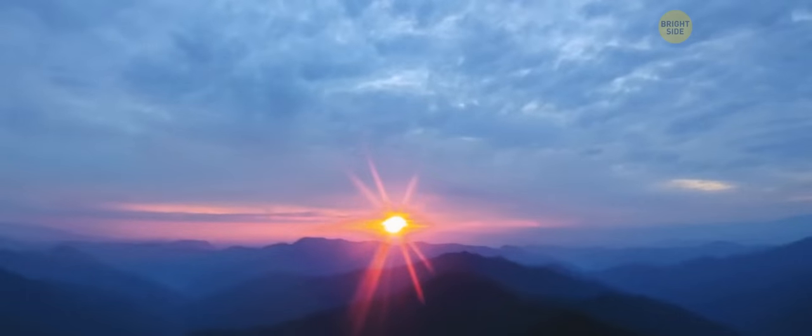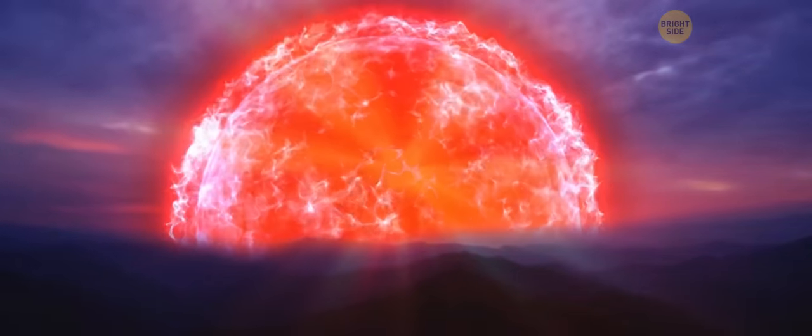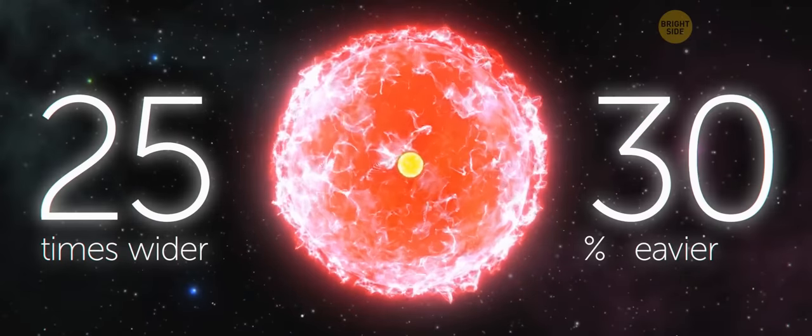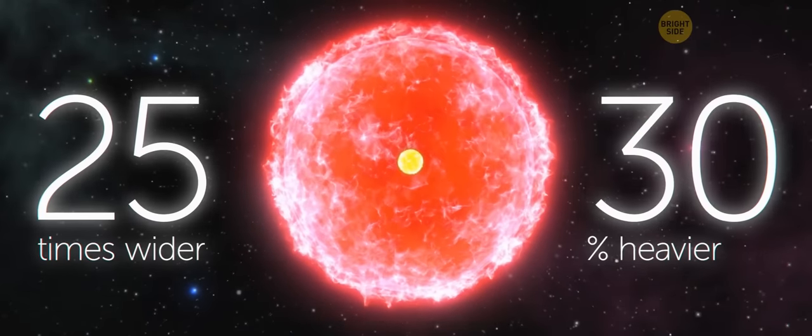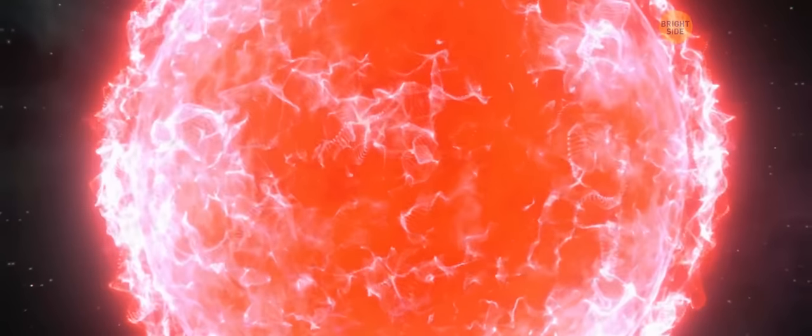What we see in the sky isn't a small yellow dot anymore, but a giant red ball. It's 25 times wider and 30% heavier than the sun. Even though Arcturus is a little cooler, it's still a total nightmare for Earth.